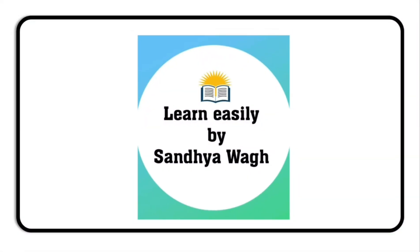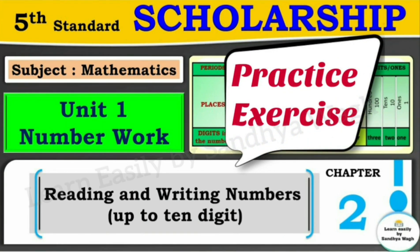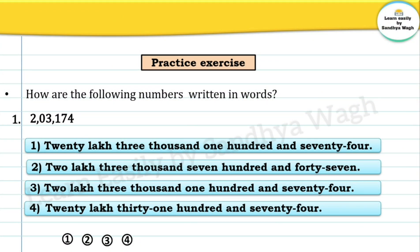Hello dear students. We have studied the second chapter on reading and writing numbers up to 10 digits for the fifth standard scholarship subject mathematics. In today's video we will solve the practice exercise. The question asks: how are the following numbers written in words? Each number has four options and we need to choose the correct option. The first number is 2031740. To write it in words, we will use a place value chart.